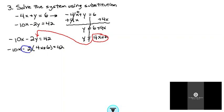So now I'm going to distribute that over both the 4x and the positive 6. So I have negative 10x, negative 2 times 4x, plus negative 2 times 6.